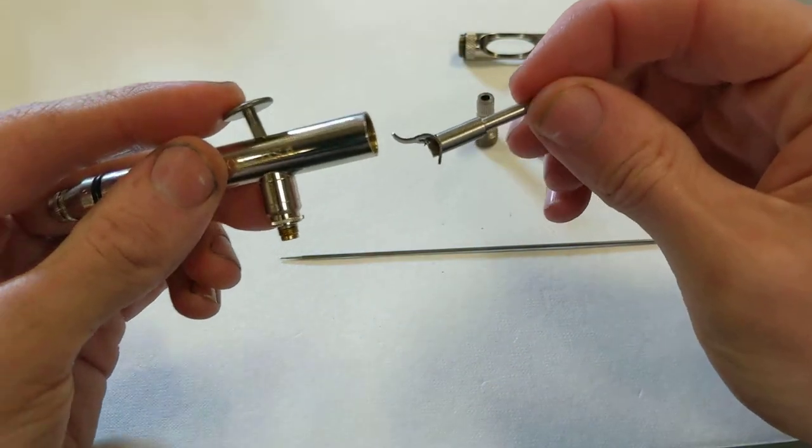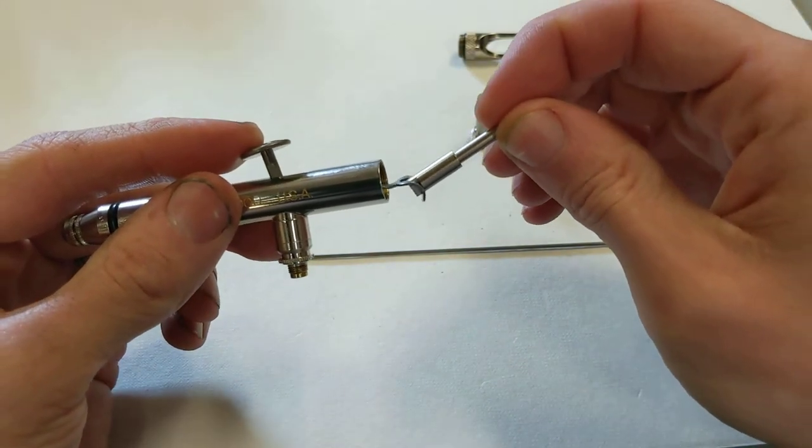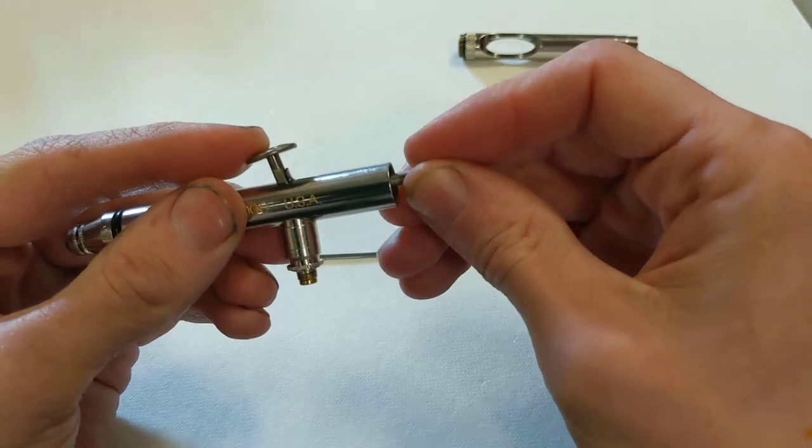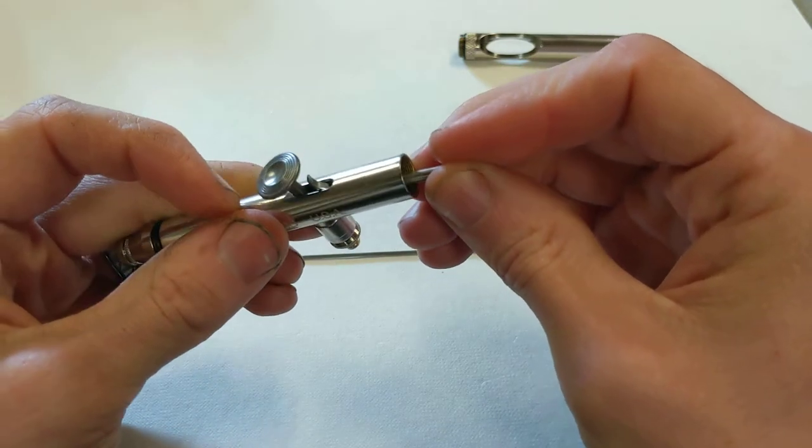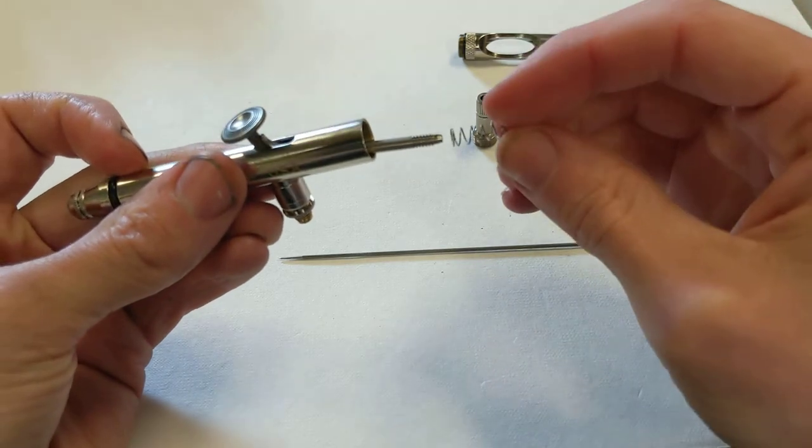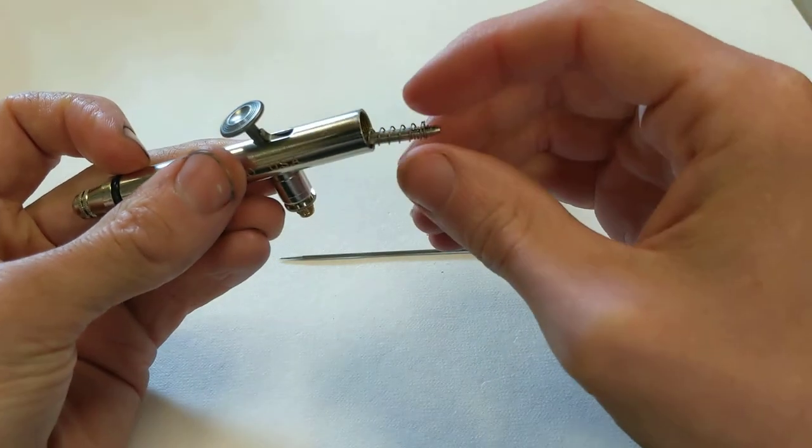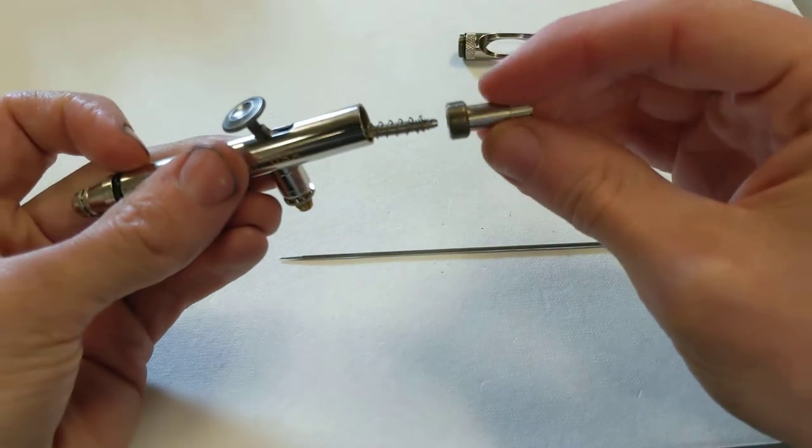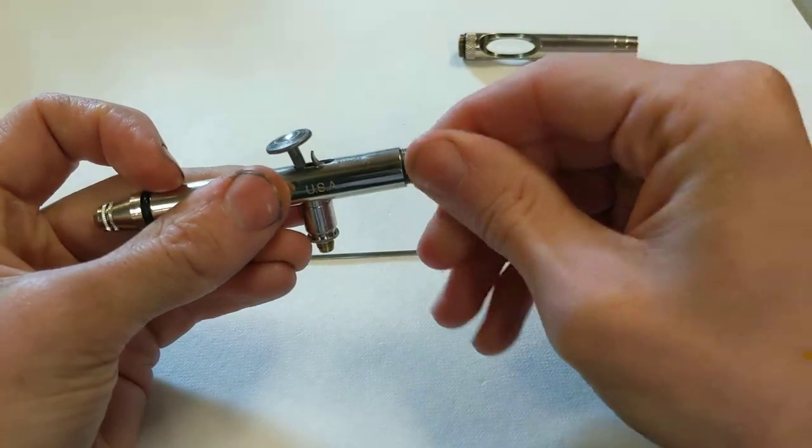After you've got the trigger in there, put the needle tube in there. Just slide it in. And that tip should come up through the hole. Now put your spring over the assembly and put the tighten-down piece in there.